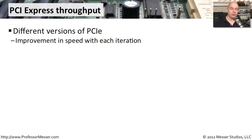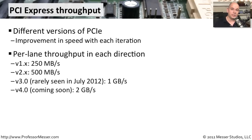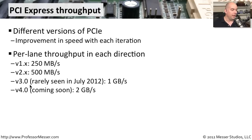Through the years there have been different versions of PCI Express, and you'll need to look at your motherboard to determine which version it's using. Version 1.x had 250 megabytes per second lanes in each direction. When we got to PCI Express version 2.x, it doubled the speed up to 500 megabytes per second. There is also a version 3.0 with the capability of sending 1 gigabyte per second in either direction. And there is currently work underway for version 4.0, said to increase the speed up to 2 gigabytes per second in both directions.